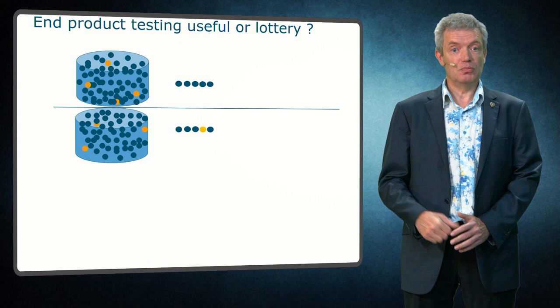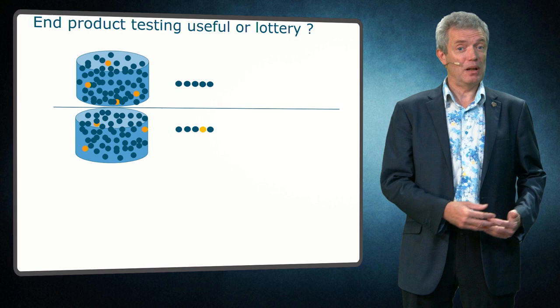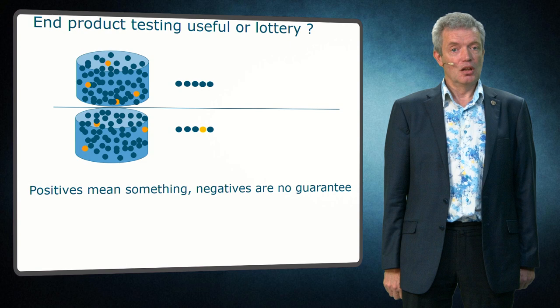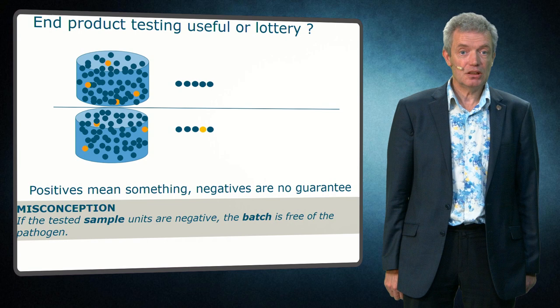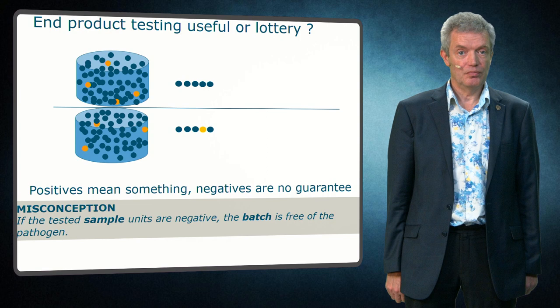As a joke you could even say that in the case of a positive found, the batch is now safer since at least you took out one of the pathogens from the batch. So a positive means something, but a negative is definitely not a guarantee. It is a misconception to think that if all your samples are negative this is proof that your batch is free of the pathogen — it only proves that the samples you tested are free of the pathogen.